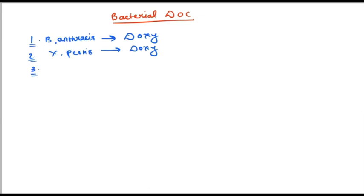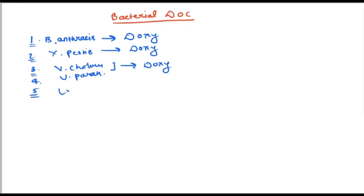Third is Vibrio cholerae — the drug of choice is doxycycline. Vibrio parahaemolyticus is also doxycycline. You have to memorize this drug. I'll tell you at least nine bacteria for which we prescribe doxycycline. Next is Leptospira — we give doxycycline. Nine problems, one solution: doxycycline.